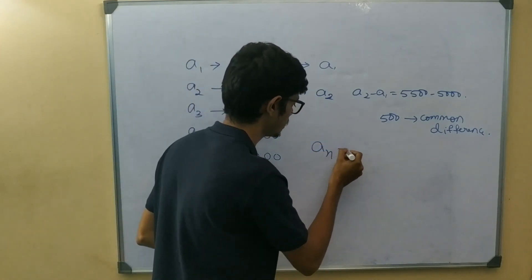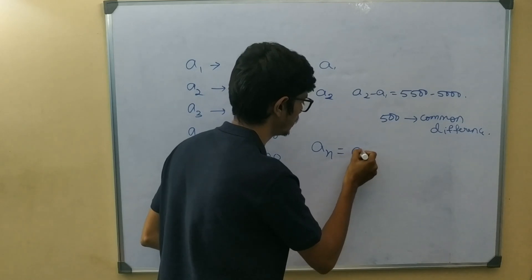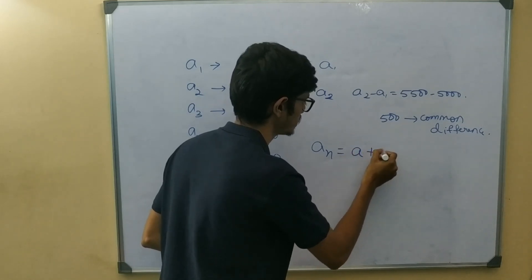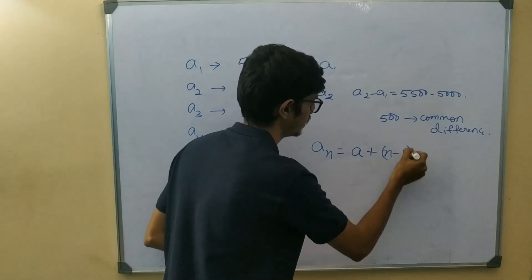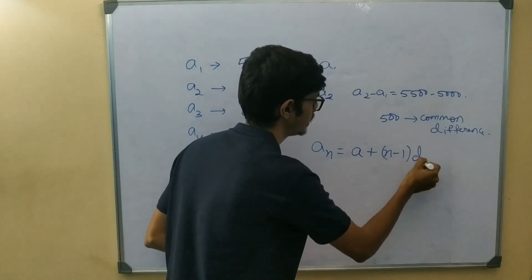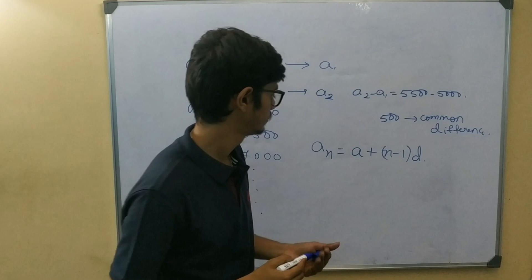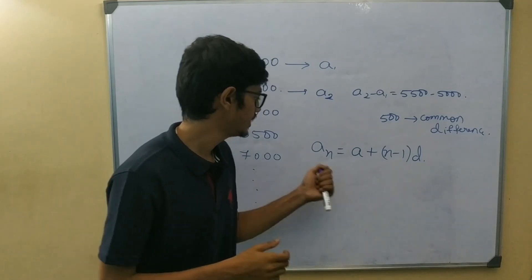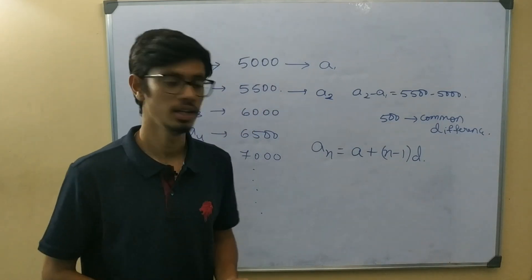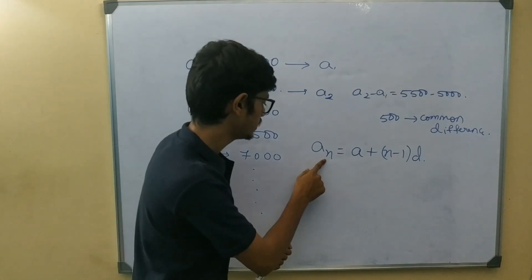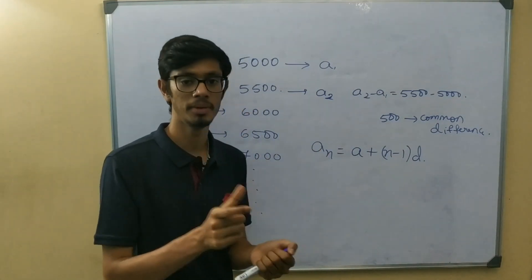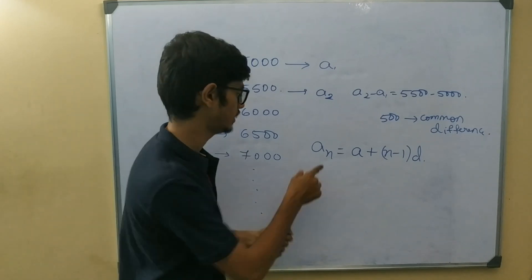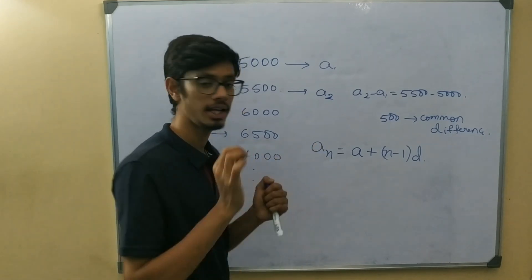The formula for the nth term of an arithmetic progression is: An is equal to a plus n minus 1 into d. So 'An' represents the nth term, 'a' is the first term, 'n' is the term number, and 'd' is the common difference.